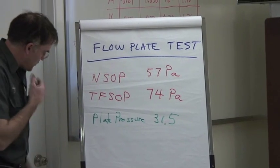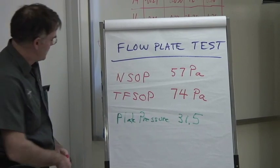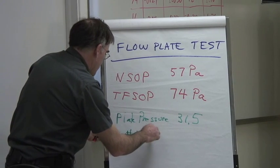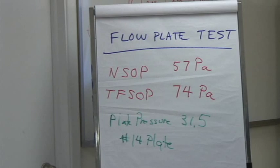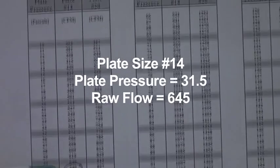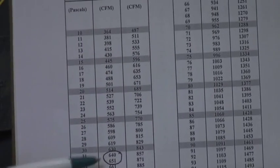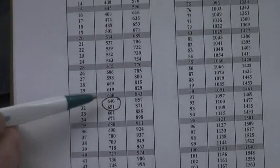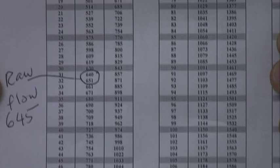We're ready to actually get to a flow and a correction. The plate we put in was the number 14 plate. We have our measurements. All that's left is to look up what we call the raw flow, which is what came off from our plate pressure and our plate size, which was the number 14. We were kind of in between 31 and 32 Pascals of plate pressure, so a flow between about 640 and 650 CFM. Let's call it 645.